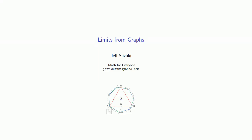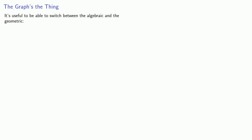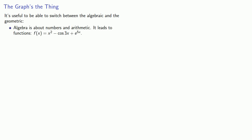Given a graph, we can also determine, or at least approximate, the values of many limits. And this speaks to a more general rule. It's useful to be able to switch between algebraic and the geometric. Algebra is about numbers and arithmetic. It leads to functions — f of x equals x squared minus cosine 3x plus e to the 5x, and similar statements. We have formulas, we have numbers, we have arithmetic, and these are all algebraic ideas.